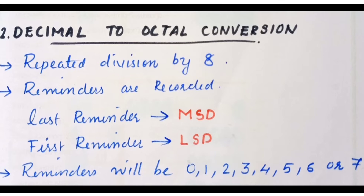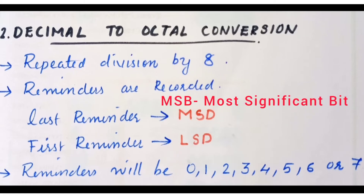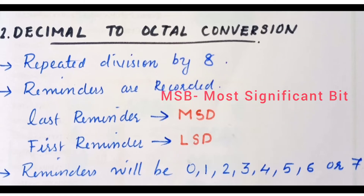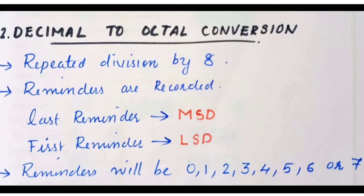We write the octal number from the remainders. The last remainder is the MSD — Most Significant Digit. The first remainder is the LSD — Least Significant Digit. When we say binary digits we call it a bit, so we say most significant bit. But for octal, decimal, and hexadecimal, we call it most significant digit.